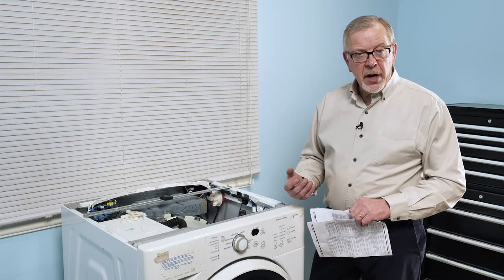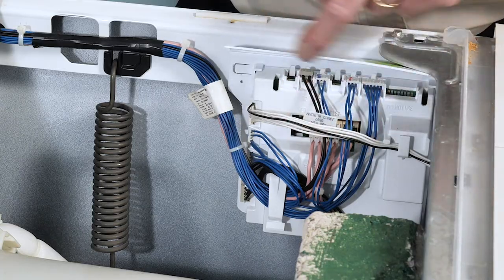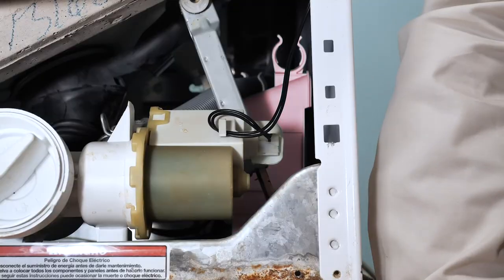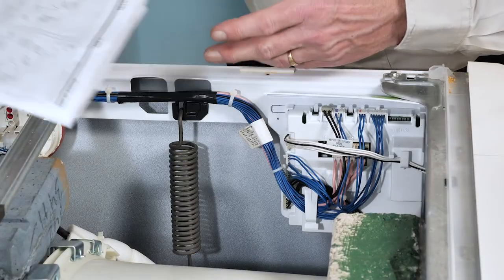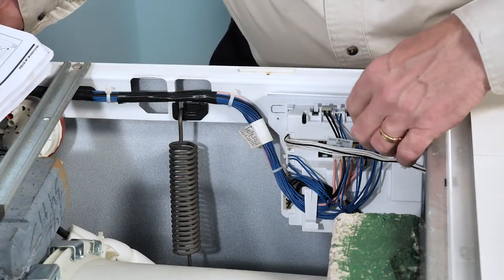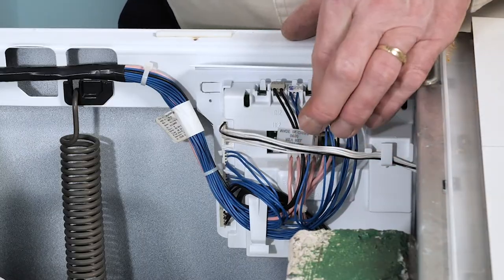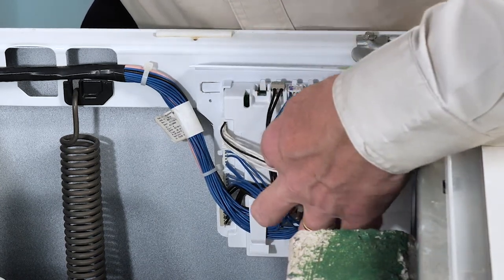Before we begin our diagnostic cycle, the first thing we'll do is check the connections between our main control board and our motor control unit located at the base of the washer. Using the wiring diagram packed with the product, we've identified two harness connectors and verified that both are nice and secure and there's no signs of any arcing or corrosion.